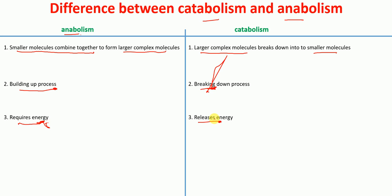Anabolism, as the name suggests, does not utilize oxygen — 'ana' meaning without oxygen. Anabolism does not utilize oxygen, whereas the catabolism process utilizes oxygen.